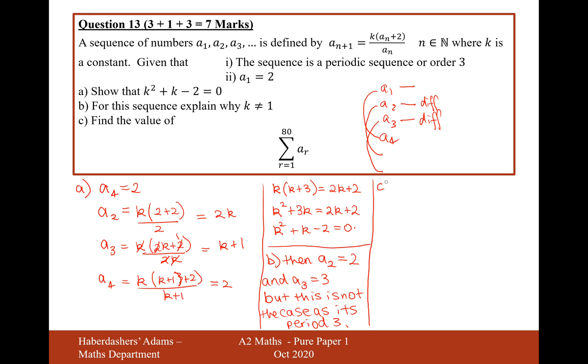So what we could therefore say for this question here is that if we factorize it, I'm just thinking this would probably be the next step, then we get that k equals -2 and k equals 1. Now we've just shown for this sequence why k cannot equal 1. So therefore, I think that was a clue for us to work out what k was. So k is equal to -2.